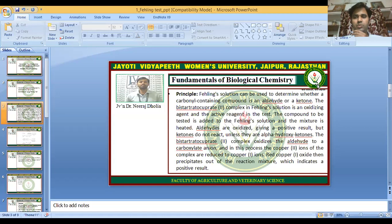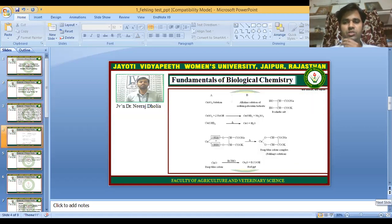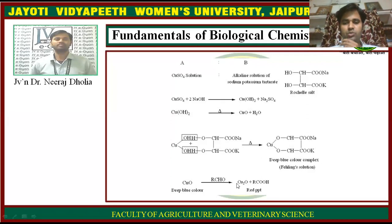The red copper oxide then precipitates out of the reaction mixture, indicating a positive result. This is the principle behind the test — the complex formed in the Fehling's solution reacts with aldehyde groups and gives the red precipitate.